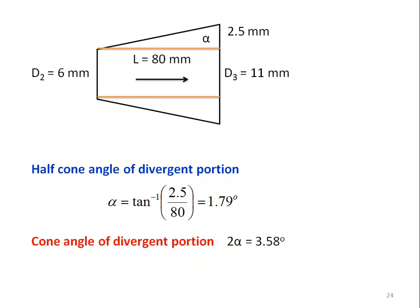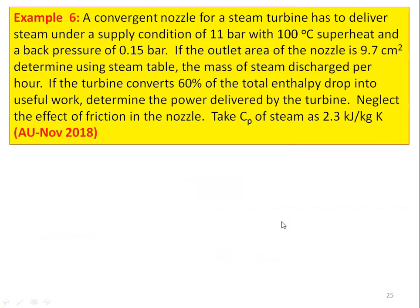The cone angle of the divergent portion is 3.58°, the velocity at the throat is 557.6 m/s, and the temperature at the throat is 273.6°C. This is the end of problem 5. Next problem from the 2018 question paper: a convergent nozzle for a steam turbine has to deliver steam at 11 bar with 100°C superheat and a back pressure of 0.15 bar. Neglect the effect of friction in the nozzle.